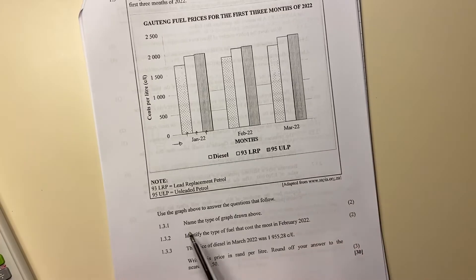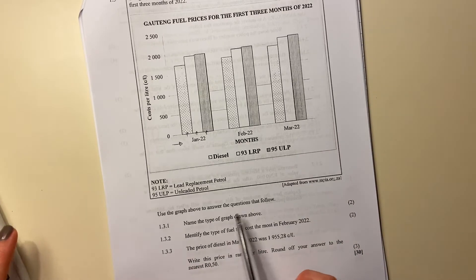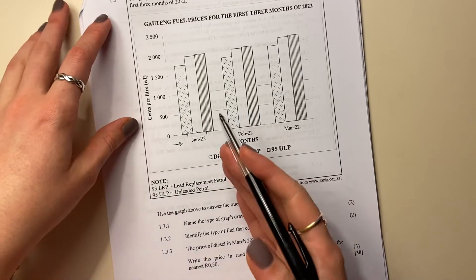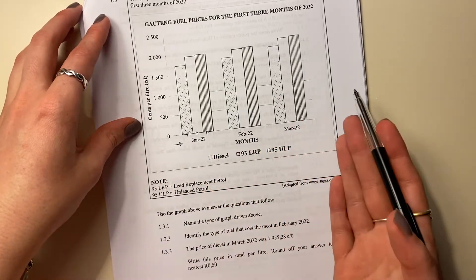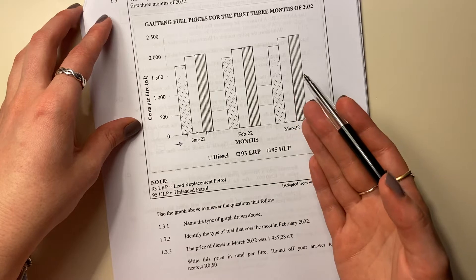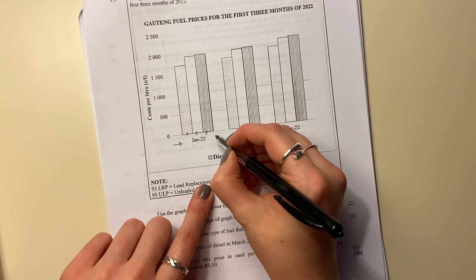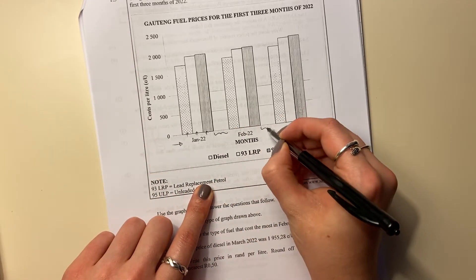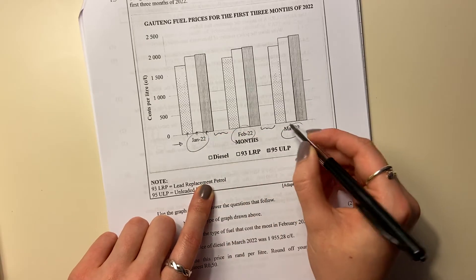Let's now look at the questions. So it says, use the graph above to answer the questions that follow. Name the type of graph drawn above. Remember I said to you, I've really talked to you through this. It's not just a bar graph. It is a compound bar graph. It's not a histogram.